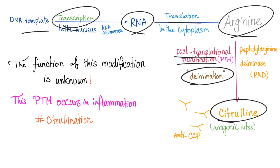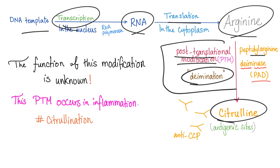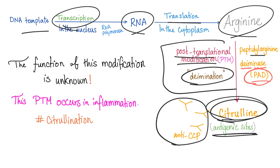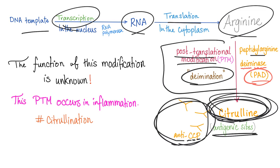Be specific: this process is called de-imination — not to be confused with de-amination. Post-translational modification is all about enzymes. This citrulline has some antigenic sites, and antibodies are going to attack this innocent citrulline.